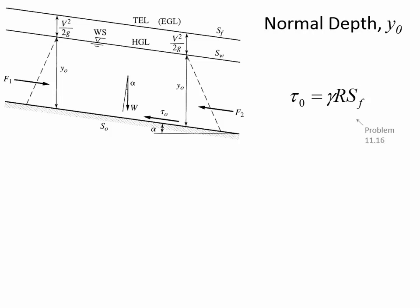F1 and F2 are equal because the depth and cross-sectional area are the same, so they cancel out. What we end up with is that the shear stress equals the component of the weight of the water acting in the horizontal direction. This flow is in equilibrium, and how quickly the water moves depends on slope and resistance.